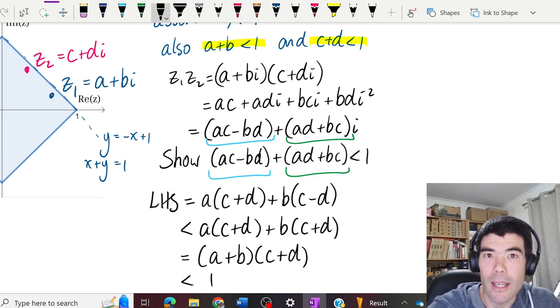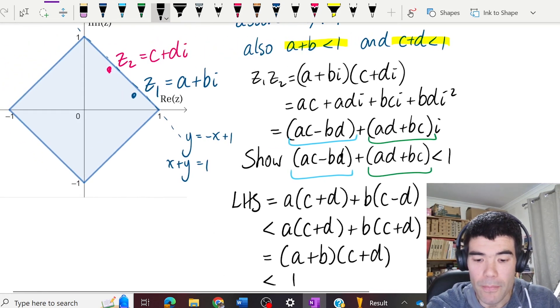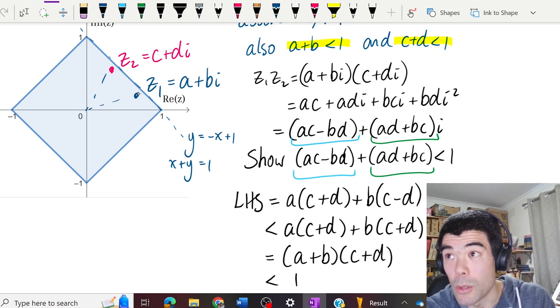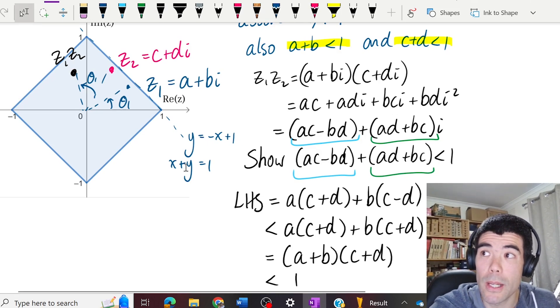But we're not quite done yet. I wonder if you can see why. It might help to look at the diagram. And if we multiply z1 and z2, especially if I move z1 around a little bit, it could be the case that when I multiply z1 and z2, the product is actually no longer going to be in the first quadrant.